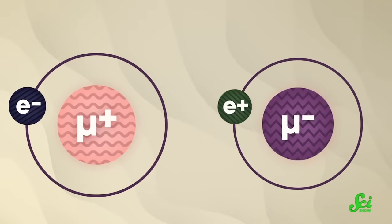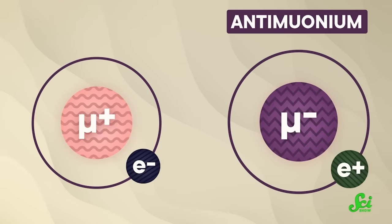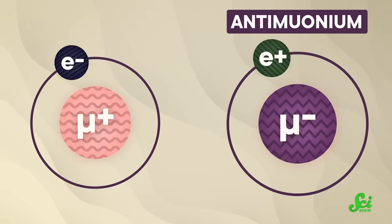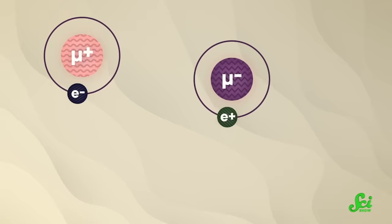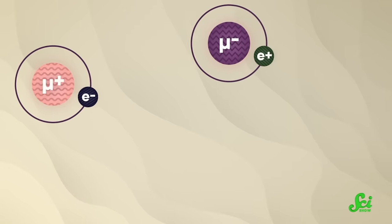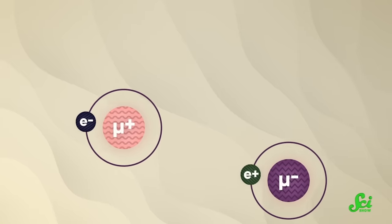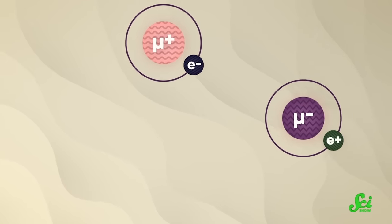And because we're in the antimatter game, antimuonium is also a thing. Instead of an antimuon forming a bond with a regular electron, this involves a negatively charged regular muon combining with a positively charged antielectron. So if scientists ever spot atoms of muonium and antimuonium falling in different ways under the same conditions, either faster, slower, or even in different directions, that will be a clear sign that there's some new, unexplained physics going on.